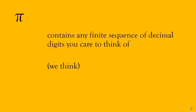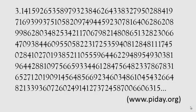We believe that pi contains any finite sequence of decimal digits you care to think of. So for example, if we're looking for the sequence 5, 9, we can find it in pi here, or indeed here, or here, and in many other places. And the same applies for any sequence of digits however long.